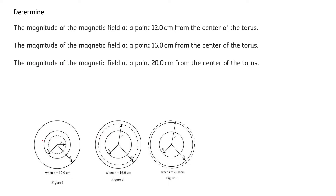To find the magnetic field, we write the line integral of the magnetic field — the integration of B with the dL vector, where dL is the infinitely small length vector — and this equals μ₀i, where μ₀ is the permeability of free space and i is the current inside the loop.